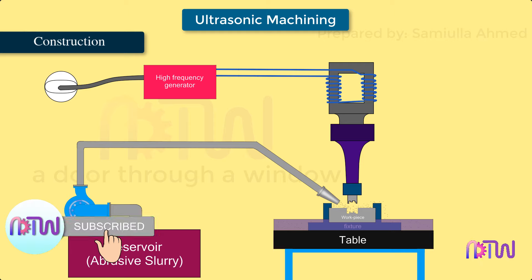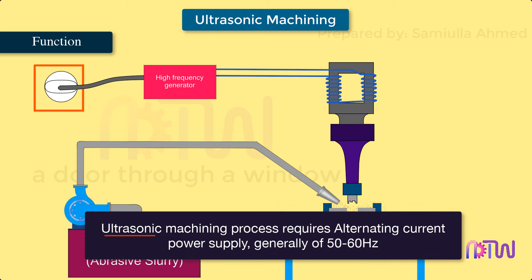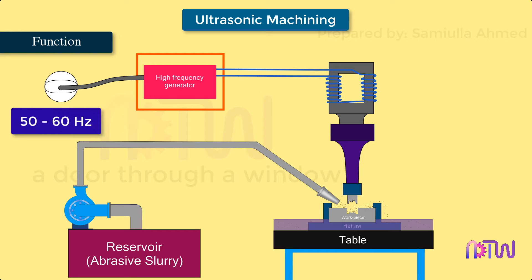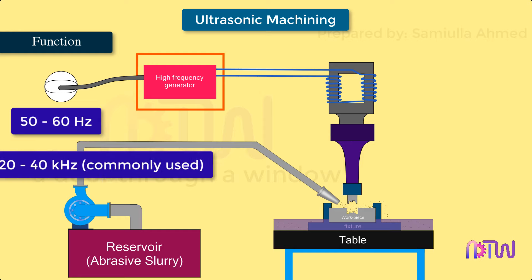Before knowing the working of this entire ultrasonic machine, let us see the function of each part. Power supply: Ultrasonic machining process requires alternating current power supply, generally of 50 to 60 hertz. High frequency generator: Also called ultrasonic power supply or electronic oscillator, is used to convert conventional electrical supply, typically 50 hertz or 60 hertz, to high frequency electrical energy. Frequencies of 20 to 40 kilohertz are most commonly used and then supplied to electromechanical transducers.